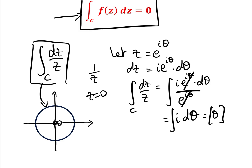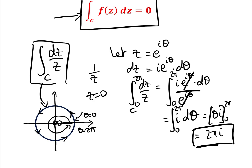Going anticlockwise around the circle, z starts at theta equals zero and goes all the way around to theta equals two pi. So the limits are zero to two pi, giving the result two pi i. Therefore the integral of one over z dz around the unit circle equals two pi i.